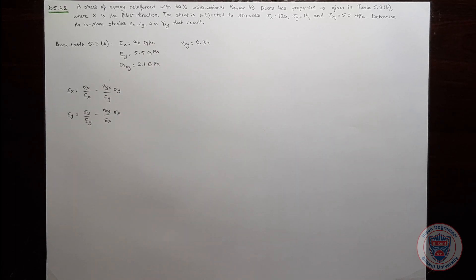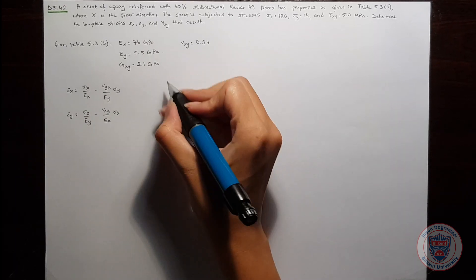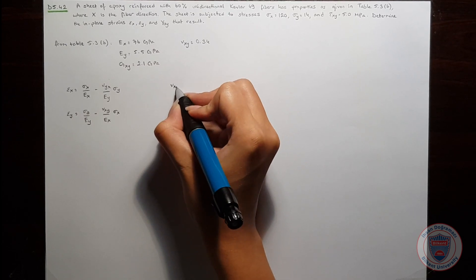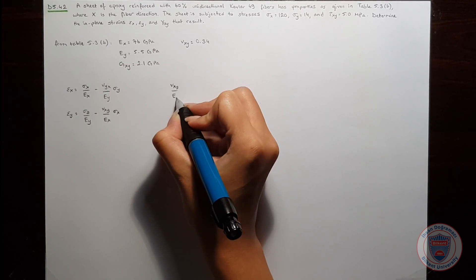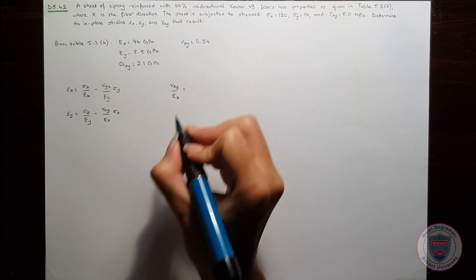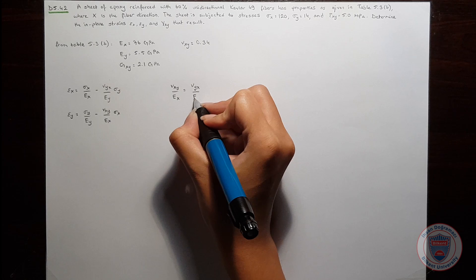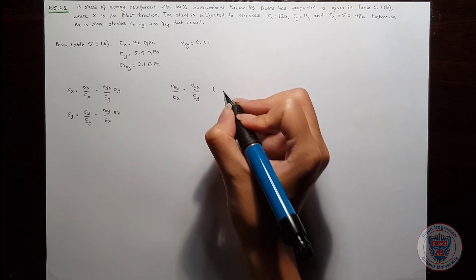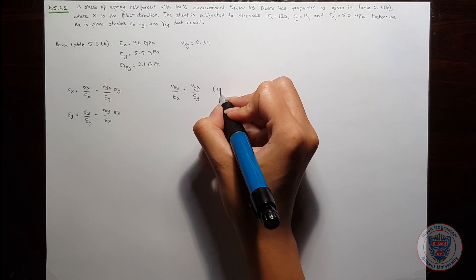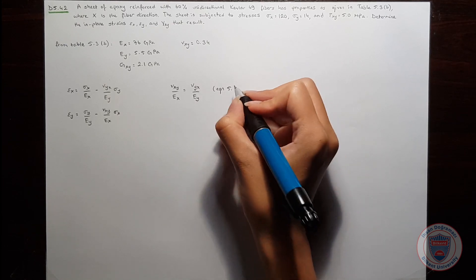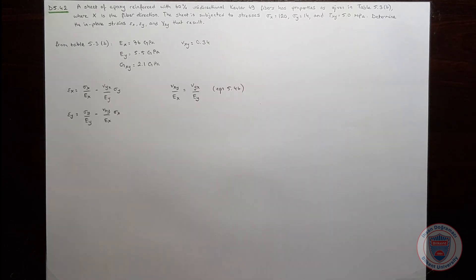But it is not a problem because we know that nu XY over EX is equal to nu YX over EY. This is equation 5.46 from the book.